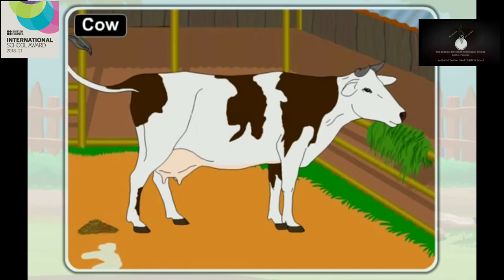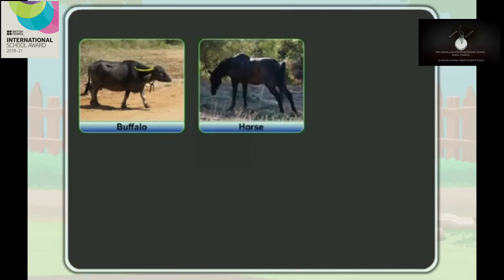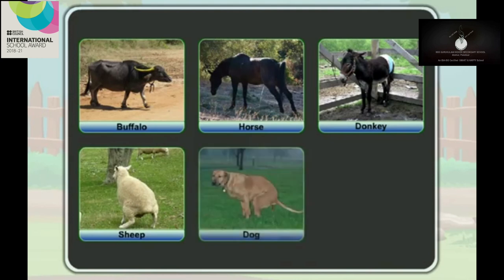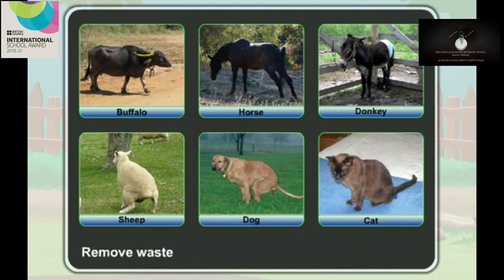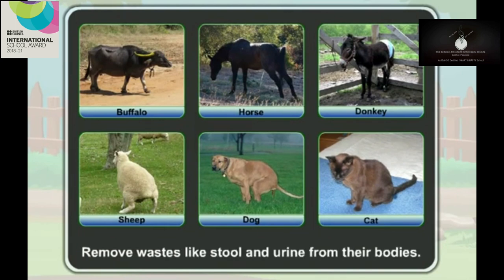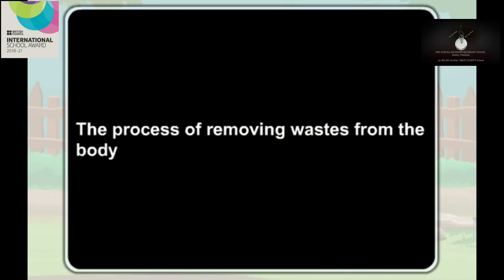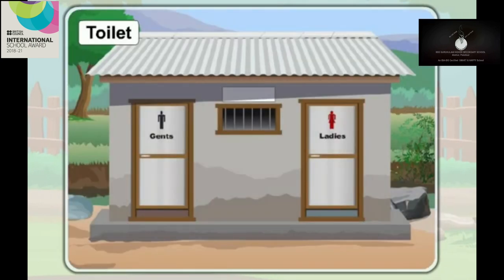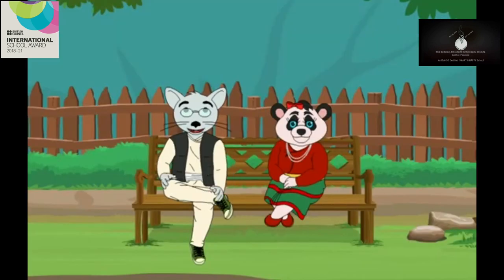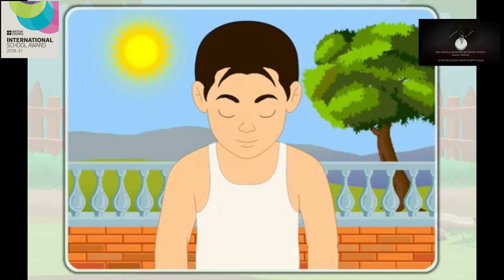Not only a cow — living things like a buffalo, a horse, a donkey, a sheep, a dog and a cat also remove wastes like stool and urine from their bodies. So all animals remove wastes like stool and urine from their bodies. The process of removing wastes from the body is called excretion. We also go to the toilet to remove wastes as stool and urine from our bodies. When we play and run, sweat comes out of our skin — the sweat is also a waste.